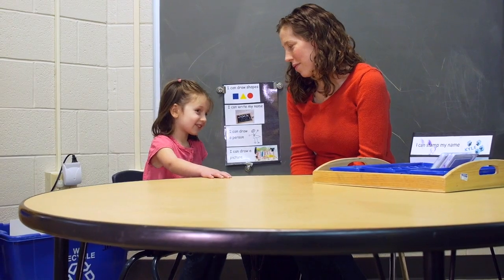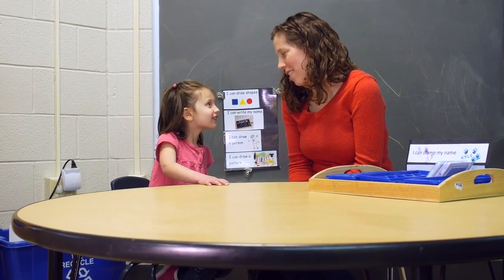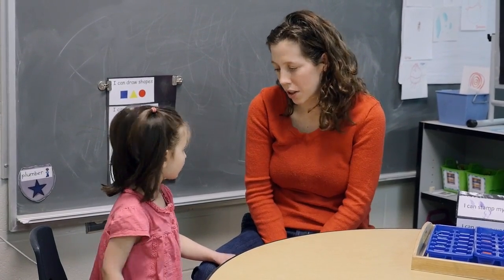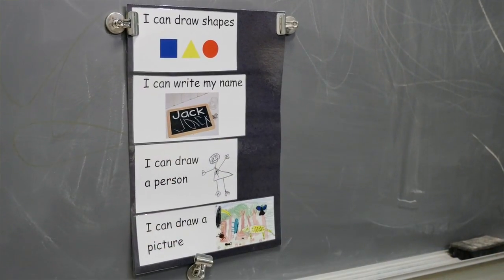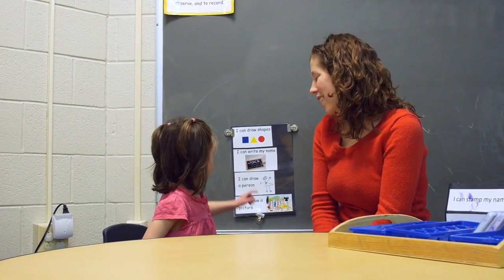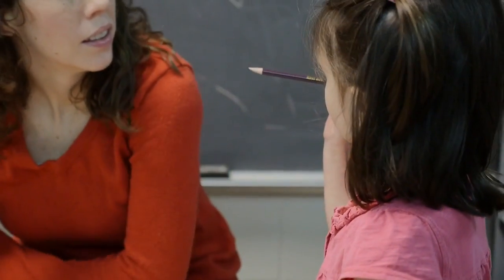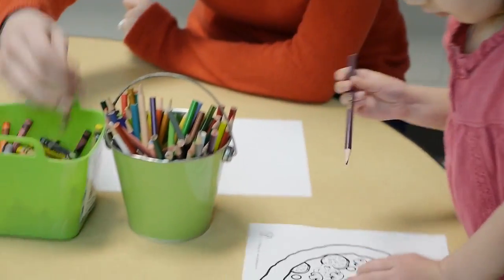Allie, what do we do in this area of our classroom? We can draw pictures. What's this area called? Writing center. And what are some of our targets in the writing center — some of the things we're learning to do? You can draw people, you can draw your name, and you can draw shapes. This area is our writing center, and it gives kids an opportunity to practice writing, to practice drawing, and to get familiar with a variety of materials.